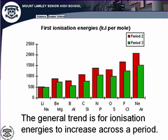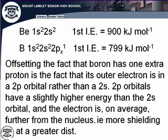Boron comes after beryllium and has a more positive nuclear charge, yet has a lower ionization energy — about 100 kilojoules per mole less. The reason is that boron's outer electron is a 2p electron rather than a 2s electron. The 2p electrons have a slightly higher energy than the 2s, so on average the electron is a little further from the nucleus, and gets a little more shielding from the inner electrons because it is at a greater distance.